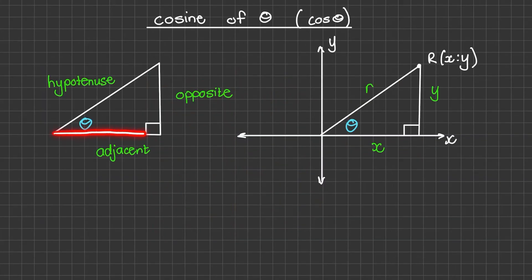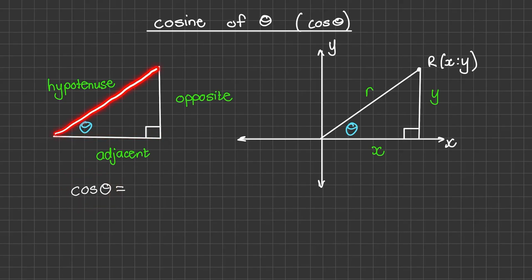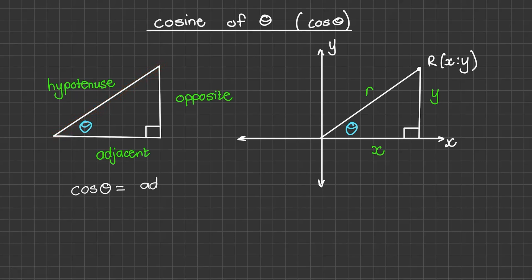First, let us discuss the cosine of theta in terms of a right angled triangle. The ratio of cosine of theta in a triangle is the length of the adjacent side divided by the length of the hypotenuse side. So it is adjacent over hypotenuse.